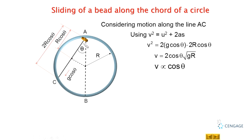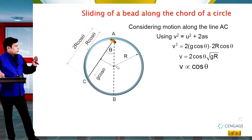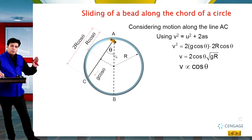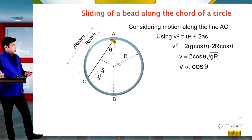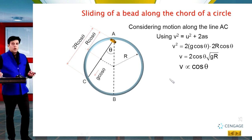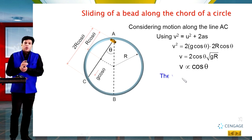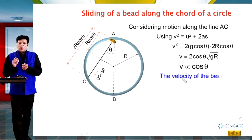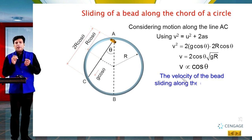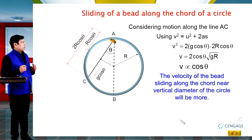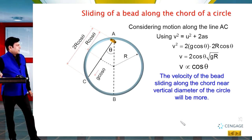The final velocity when the bead reaches point C depends on theta. If the value of theta increases, the velocity will keep on decreasing. If theta is small — meaning the chord is closer to the vertical diameter — the velocity of the bead sliding along that chord will be higher. So the bead sliding along a chord near the vertical diameter will have the greater velocity.